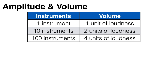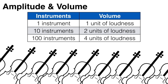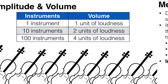Because of this, you actually have to multiply the number of instruments or the sound intensity by 10 in order to double the volume. So if one instrument produces one unit of loudness, then 10 instruments produce two units of loudness and 100 instruments produce four units of loudness.